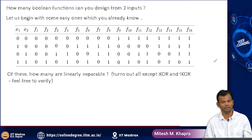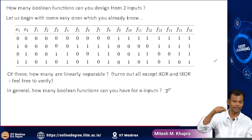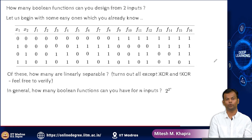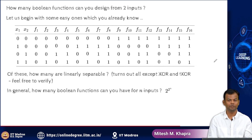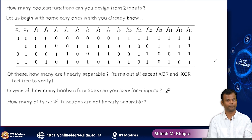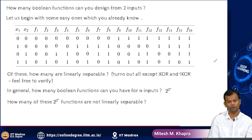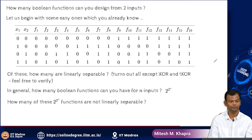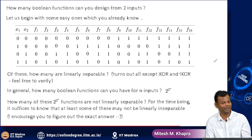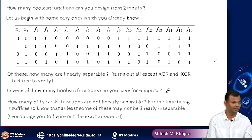Out of 16 functions, 2 are not linearly separable. In general, how many Boolean functions can you have from N inputs? It is 2 raised to 2 raised to N. For N equals 2, you had 2 raised to 2 raised to 2 functions. Of these 2 raised to 2 raised to N functions, how many are not linearly separable? Many of you might try to say the answer is N, but that is not the correct answer — in fact, this is an unsolved problem. The point is that there are going to be some functions which are not linearly separable.